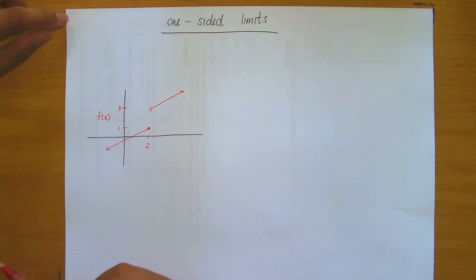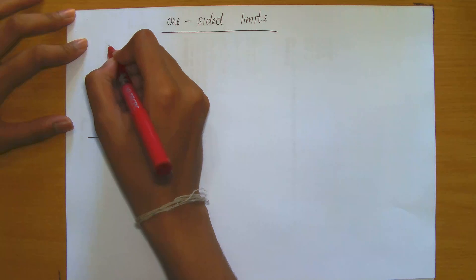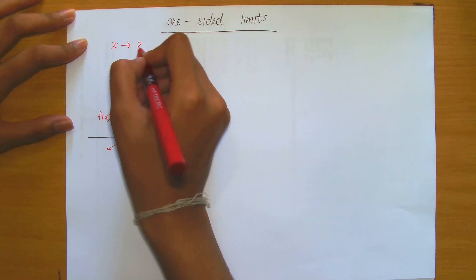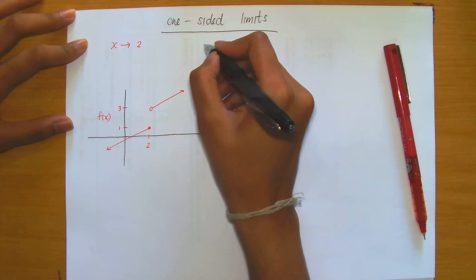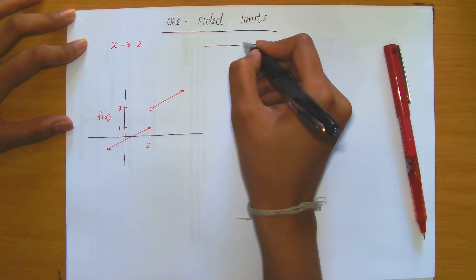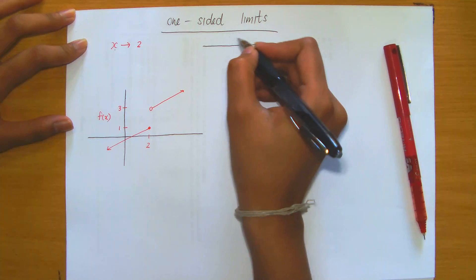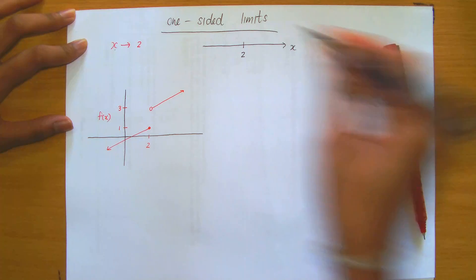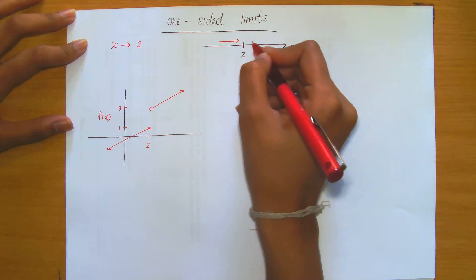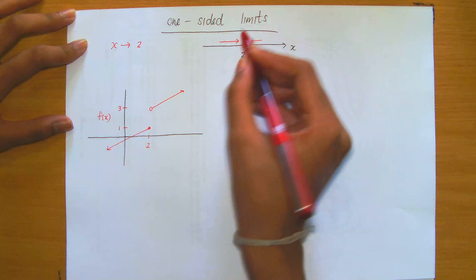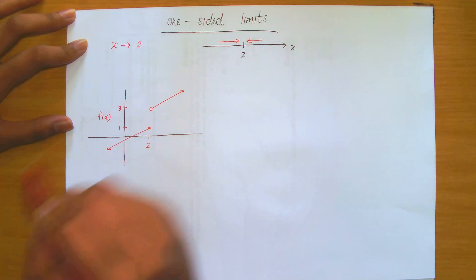Today I'm going to be discussing one-sided limits. Recall that previously, if I had told you to let x tend to the value 2 when evaluating a limit, then how would we assess this on a number line? If I draw a number line with the number 2, then when we say x tends to 2, this amounts to taking values that are arbitrarily close to 2, and we approach 2 from both directions — from the left and from the right.